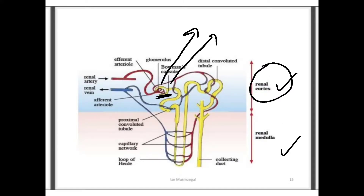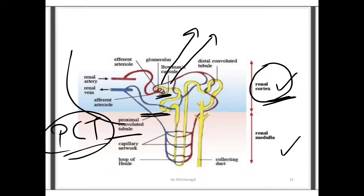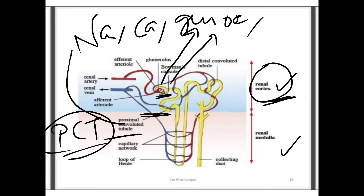The first part is the proximal convoluted tubule, also called PCT. It lies in the renal cortex region and is the main site of selective reabsorption. In the PCT, selective reabsorption of sodium, calcium, glucose, and amino acids from the nephric filtrate occurs. This is very important.